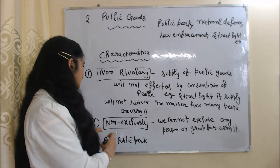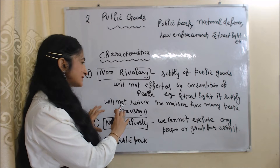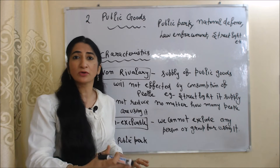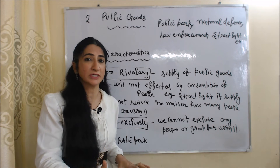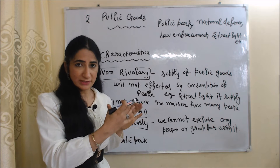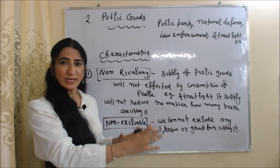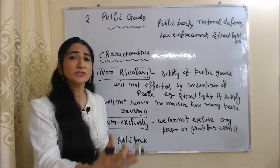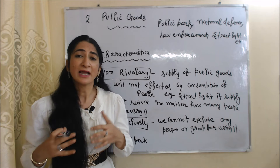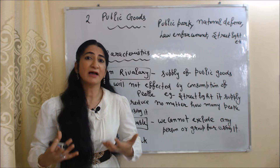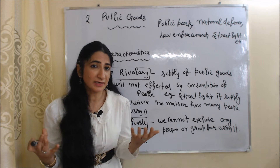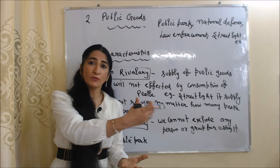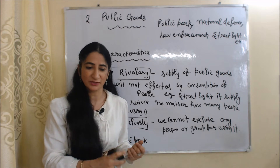The next characteristic is non-excludable, which means we cannot exclude any person or group from using public goods. For example, a public park — everyone has an equal right to use it, and we cannot exclude any person or group.